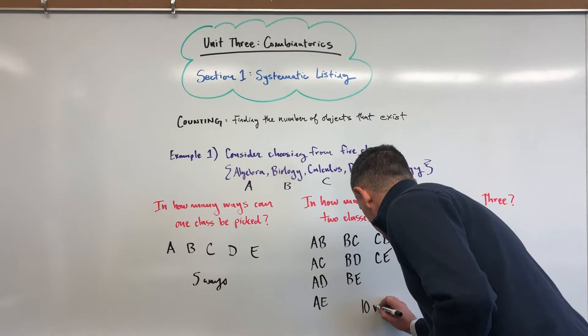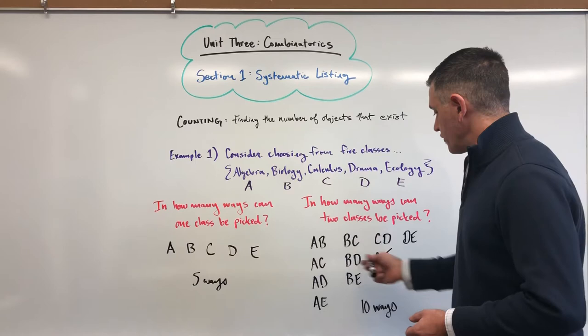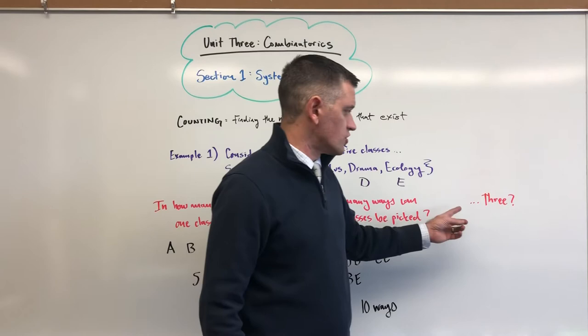So as you could guess, even if you weren't thinking that far ahead, we're probably only going to have one listing in this column and that would be Drama and Ecology put together. So we have 4 plus 3 plus 2 plus 1, ten ways that this could be done.